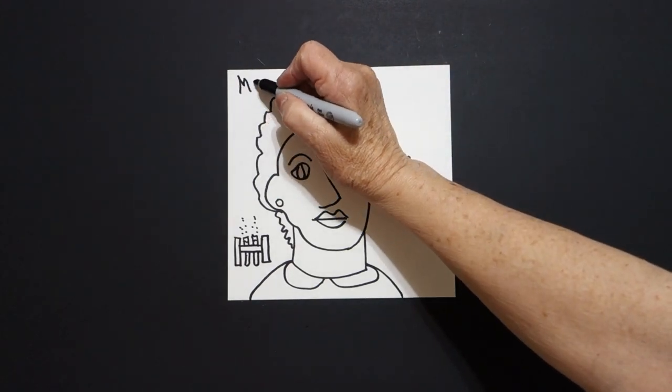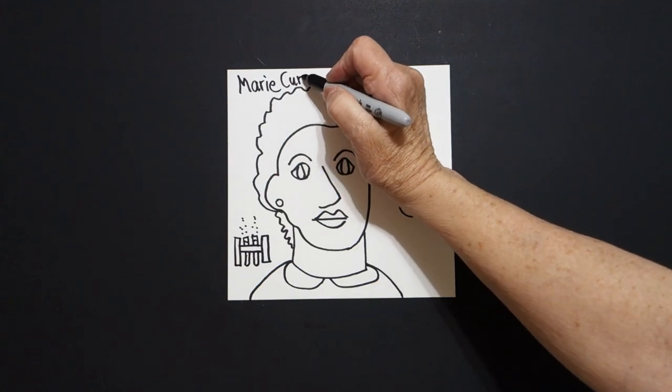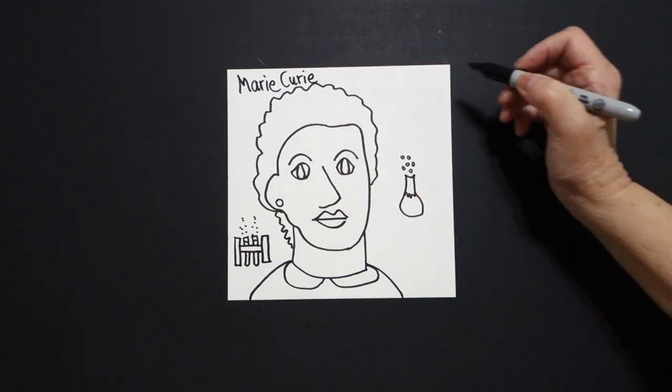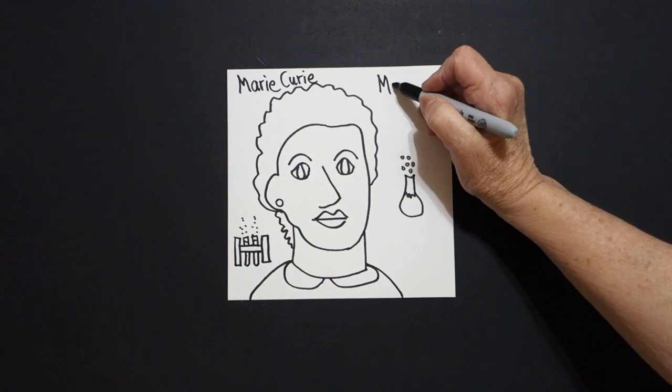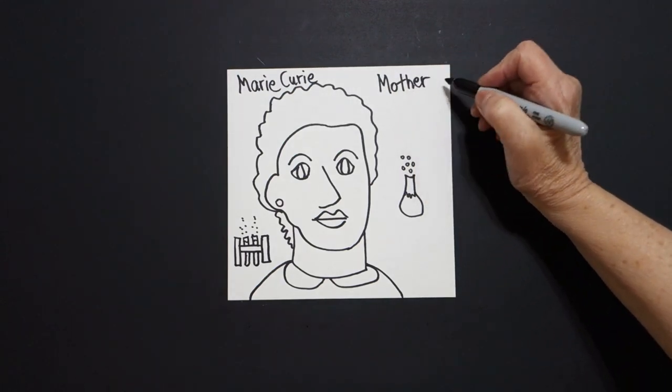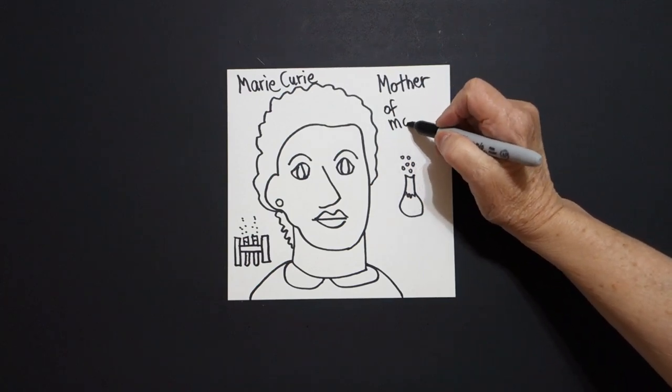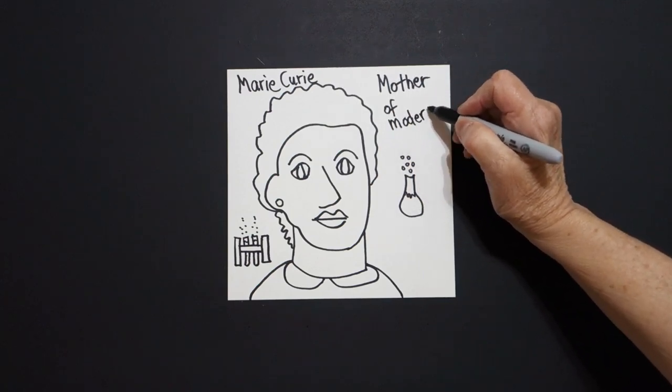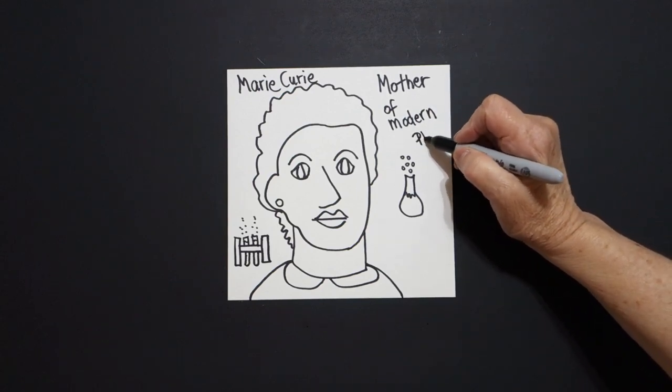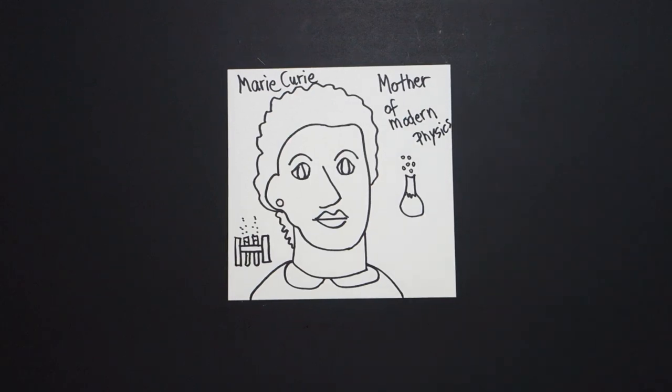Alright, her name is Marie Curie, and she is the mother of modern physics. Super important. We'll talk about her a little bit more in a minute. Alright, let's see how we're going to color this in.